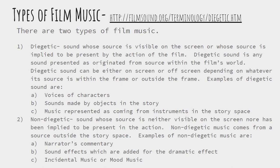If my characters can't hear it, it's non-diegetic. Non-diegetic music is sound whose source is neither visible on the screen nor has been implied to be present in the action. Non-diegetic music comes from a source outside of the story. Examples are narrator's commentary, sound effects which are added for dramatic effect, and incidental music or mood music. Tomorrow we're going to talk more about incidental music, but today we're focused on theme songs, which can be both diegetic or non-diegetic.